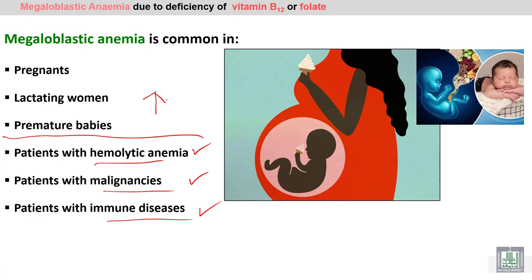Megaloblastic anemia is also common in pathological conditions like hemolytic anemia, malignancies, and immune diseases. In hemolytic anemia, increased bone marrow activity requires more B12 and folic acid to compensate for peripheral destruction. In malignancies and immune diseases, there is increased production of abnormal, malignant, or immune cells.